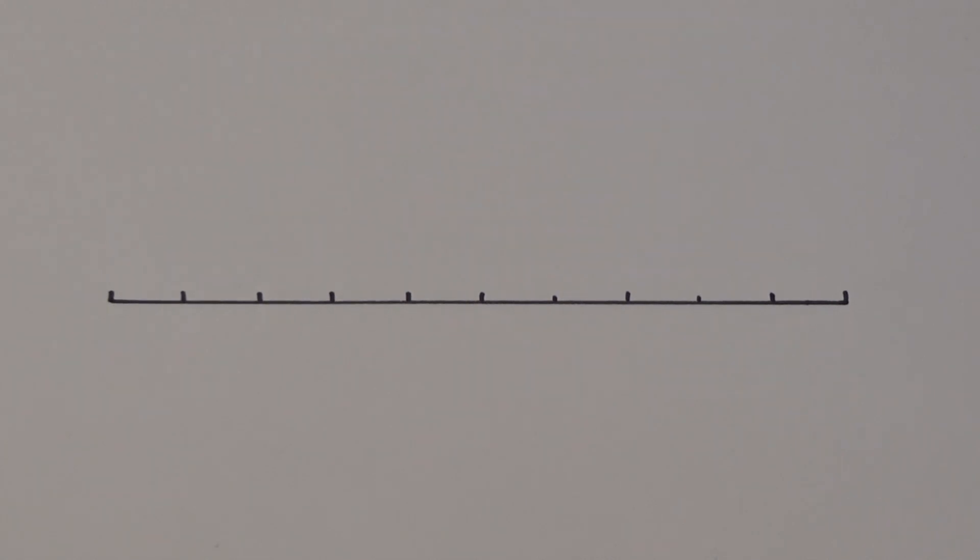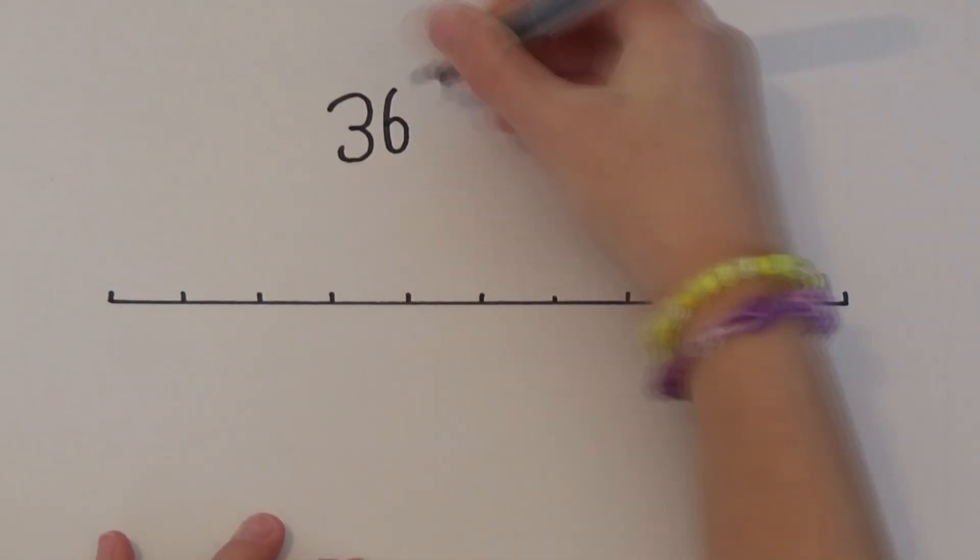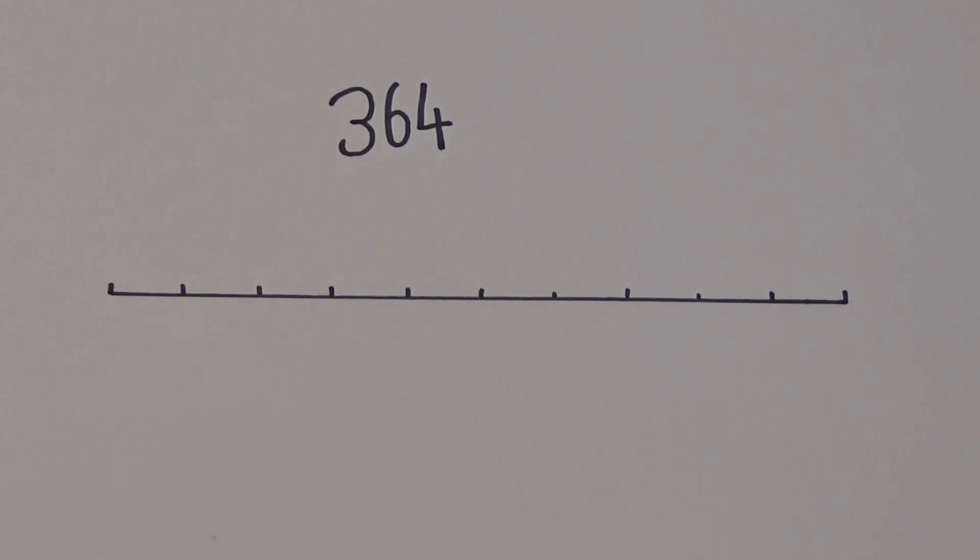We're going to start by looking at the number 364. The first thing I need to do is position the number 364 on a number line. I need to work out which multiples of 100 fall on either side. 364 falls between 300 and 400, so I need to write these at either end.